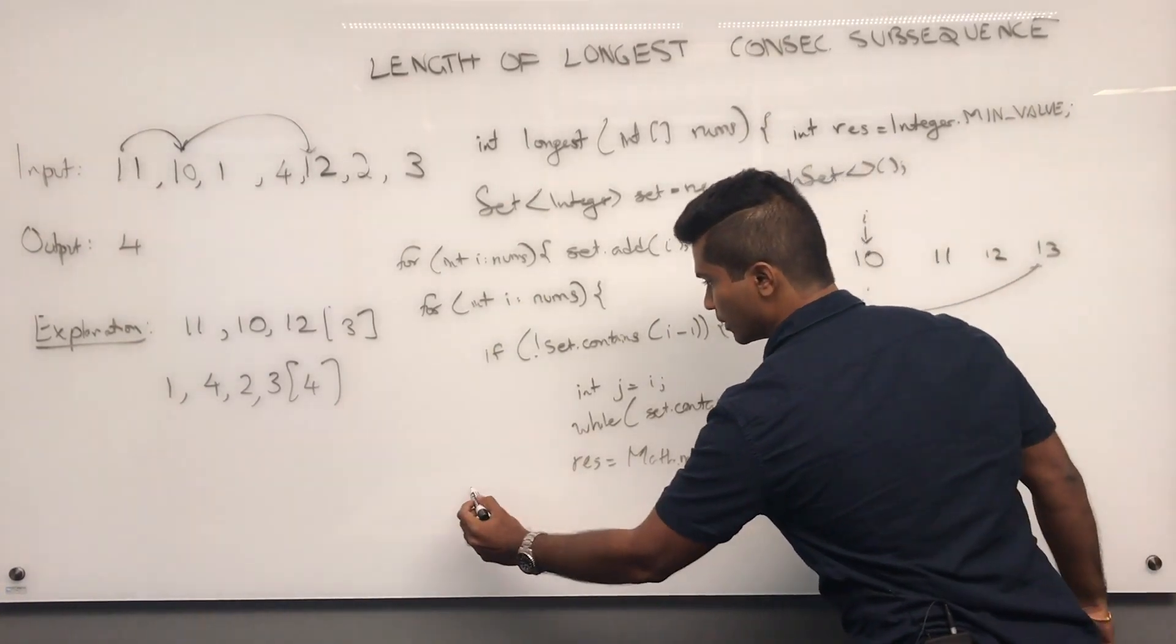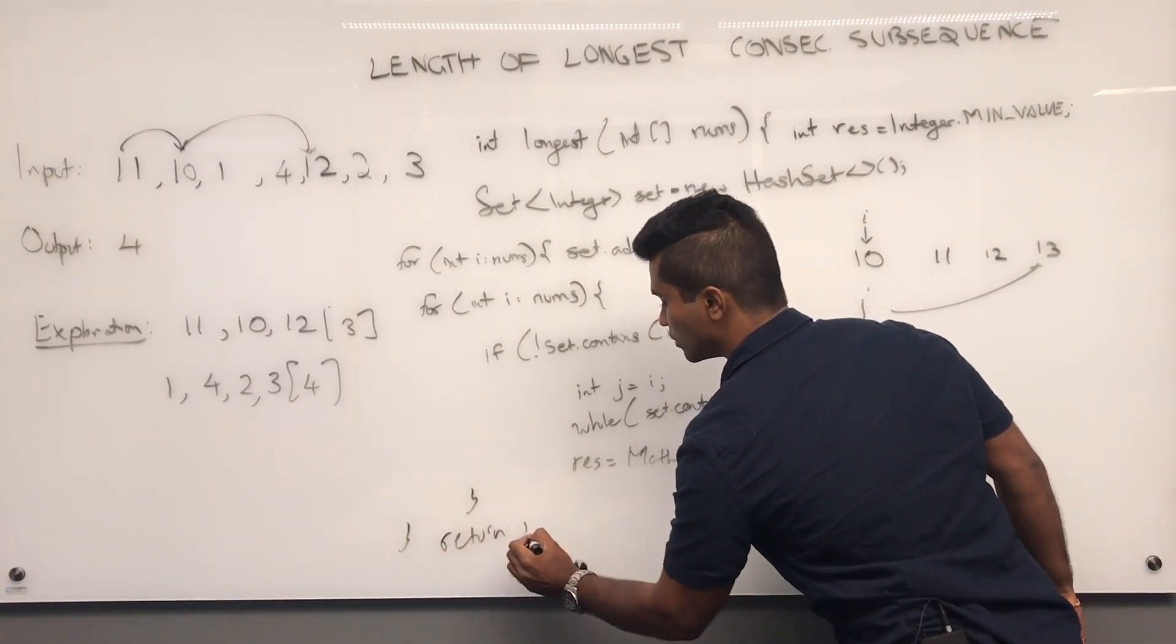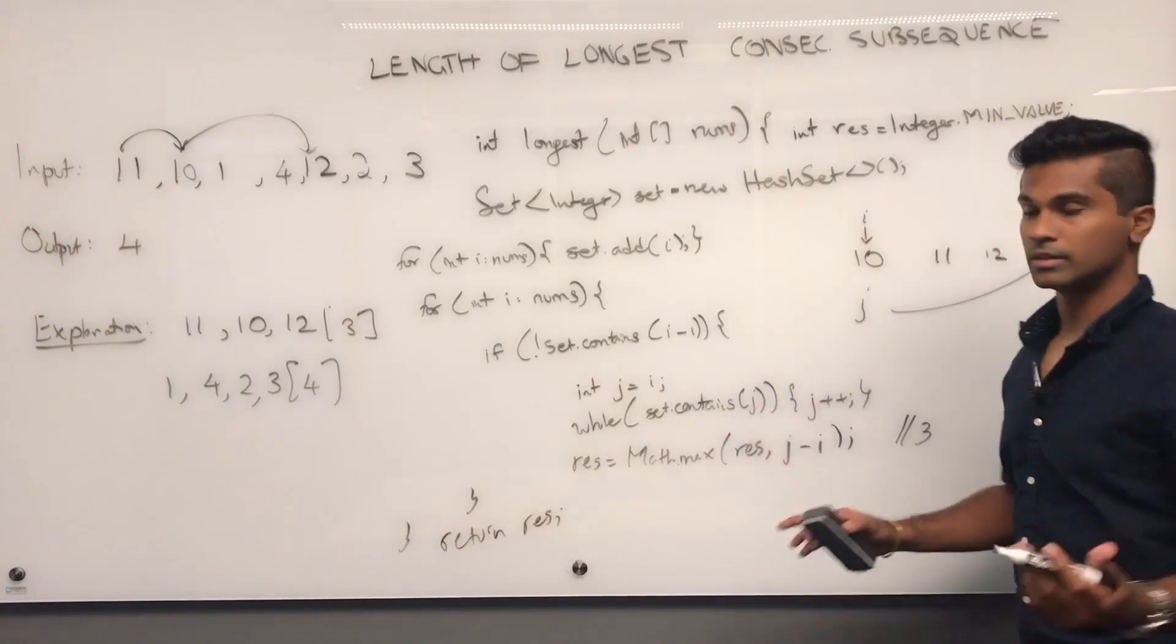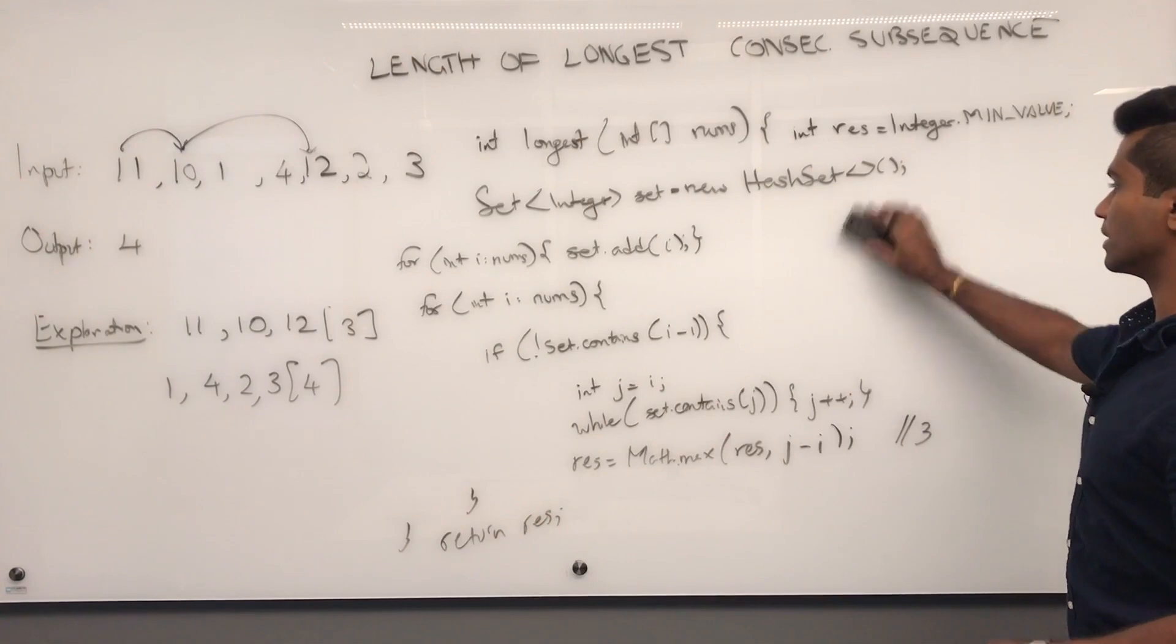And we just close the if loop and the for loop. And then, at the end, we return result. But we're still not done. Right now, because of 10, our result is three. Then, we move on to the next one.